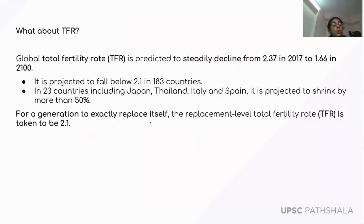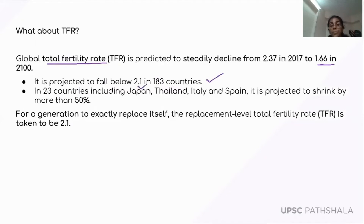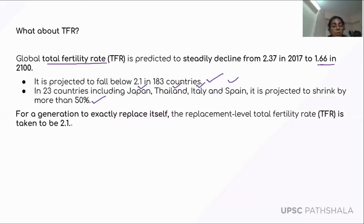The report also discusses total fertility rate. The global total fertility rate is predicted to steadily decline from 2.37 in 2017 to 1.66 in 2100. It is projected to fall below 2.1 in 183 countries, and in 23 countries including Japan, Thailand, Italy and Spain, it is projected to shrink by more than 50 percent. Note that the replacement level total fertility rate — the rate at which a generation exactly replaces itself — is 2.1.